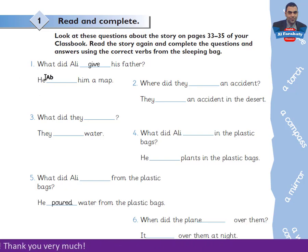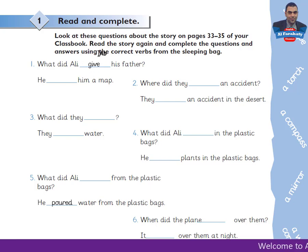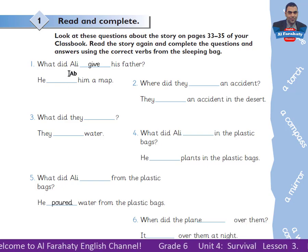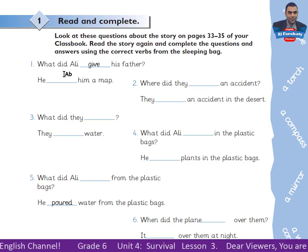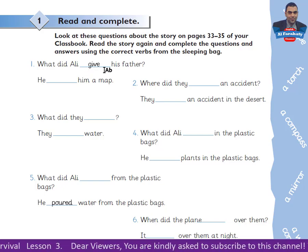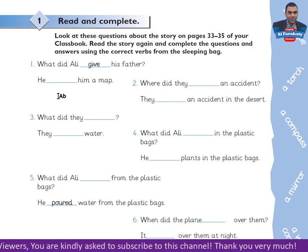Let's read the questions. Number 1: What did Ali give his father? He gave him a map. Look here — this is a question in the simple past tense: 'did' plus the verb in the infinitive. When we answer a question like this, we use the second conjugation of the verb. So in the question we use 'did' plus subject plus the verb in the infinitive, and when we answer, we use the verb in the simple past tense.